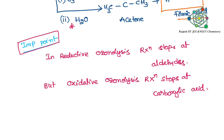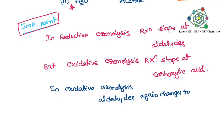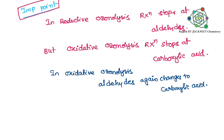In reductive Ozonolysis, the reaction stops at aldehyde because we are using zinc. In oxidative Ozonolysis, the aldehyde undergoes further oxidation and is converted to carboxylic acid. This is why we get different products in reductive versus oxidative Ozonolysis. Thanks for watching, bye bye.